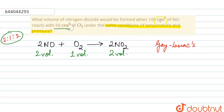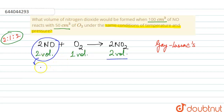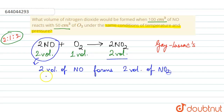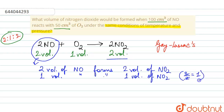Now both the values of oxygen and nitrogen monoxide in volumes are given, so we can use either one. Let us use NO. By applying the unitary method, what we have to find is kept on the right side and what is already given on the left side. So two volumes of NO forms two volumes of NO₂, meaning one volume forms one volume of NO₂ — that is, two divided by two cancels to give one volume. Similarly, 100 cm³ of nitrogen monoxide...